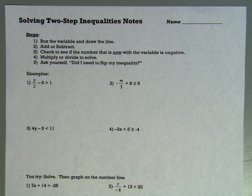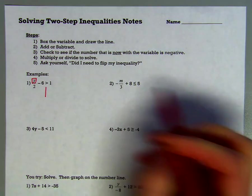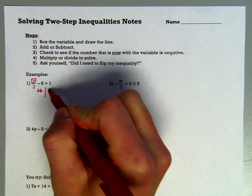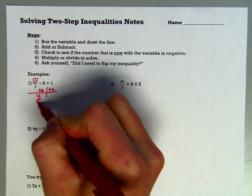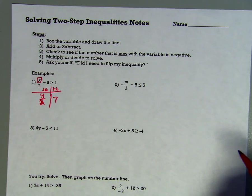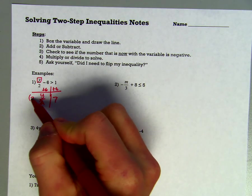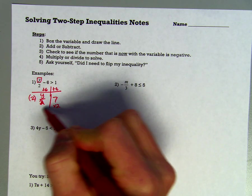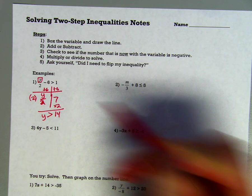The first problem: y divided by 2 minus 6 is greater than 1. I'm going to box my variable, draw my line, then add 6 on both sides, so I end up with y over 2 greater than 7. Then I do the opposite of dividing and multiply by 2 on both sides, ending up with y is greater than 14.